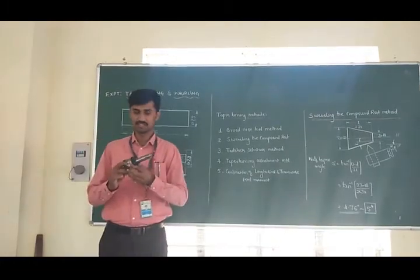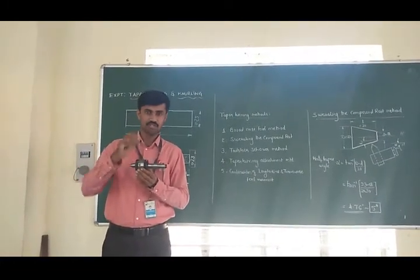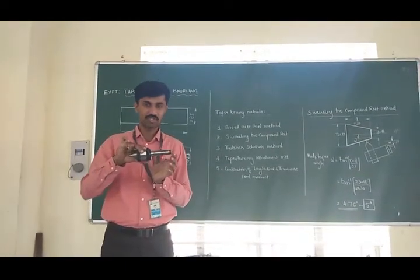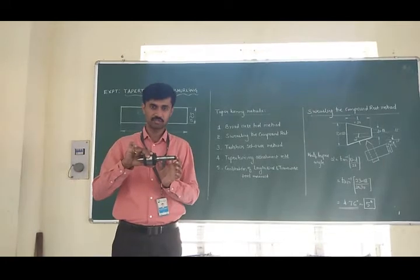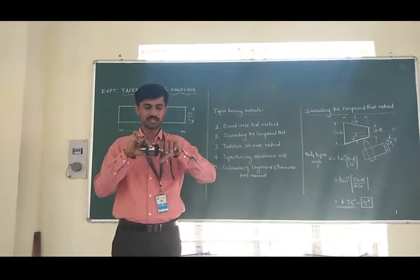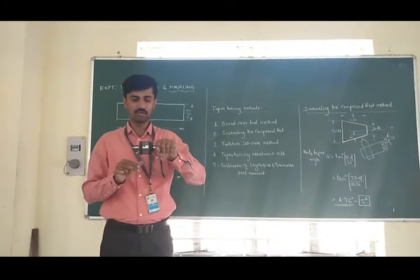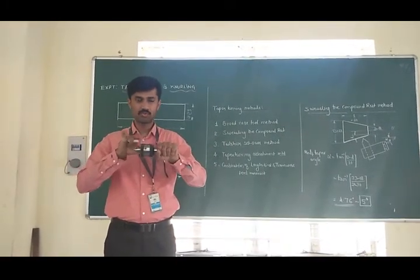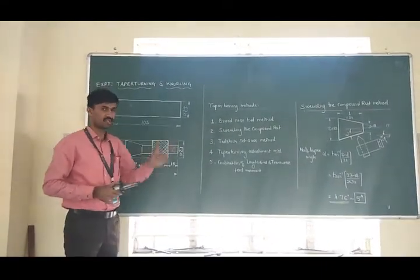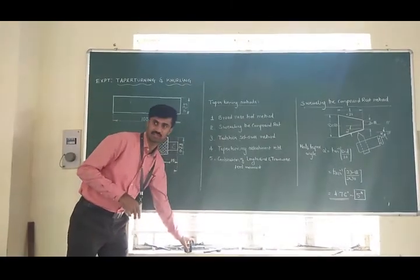For example, if you look at the dead center of a tailstock, you can see an external taper cut on the end of a dead center. This is done for the gripping purpose at the tailstock spindle. Whenever the internal taper of the tailstock spindle fits into the external taper of the dead center, it creates a firm lock where it is very difficult to remove the dead center from the tailstock spindle. So taper turning is done in order to provide a simple lock for any two mating surfaces.